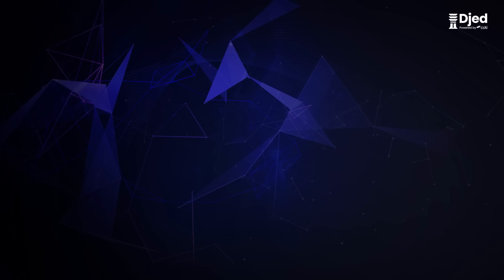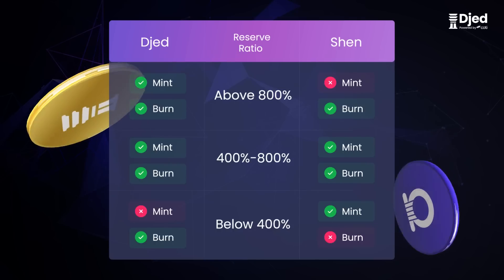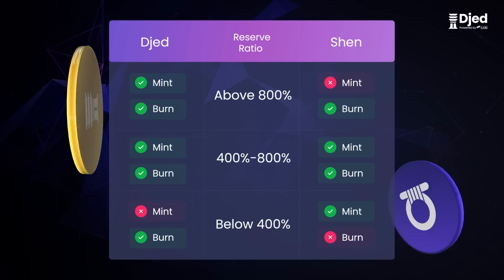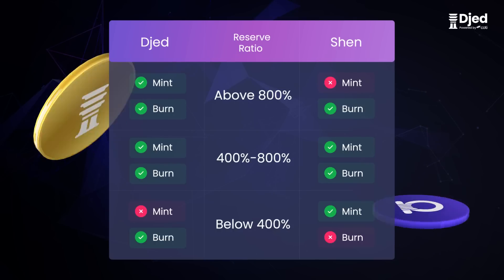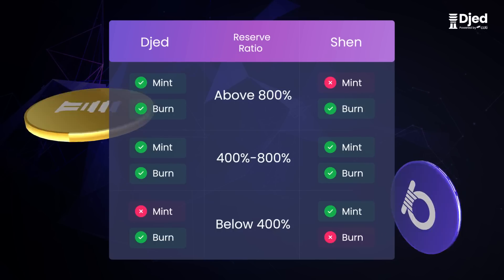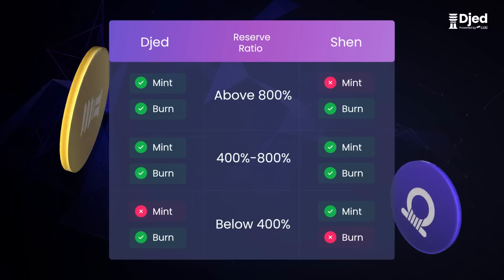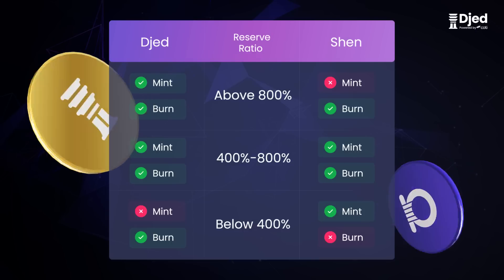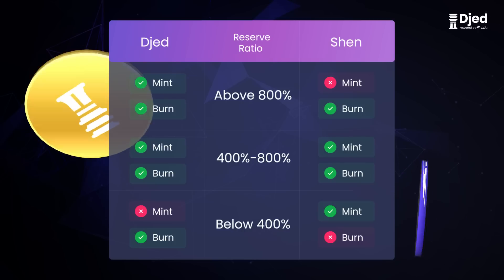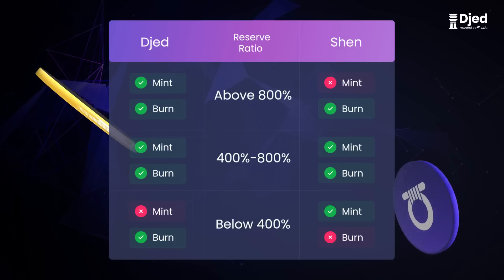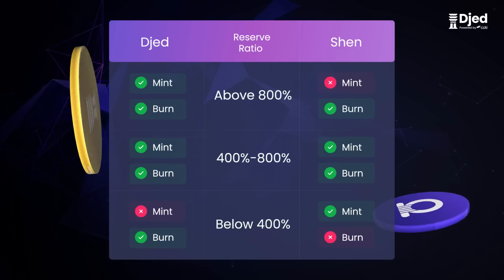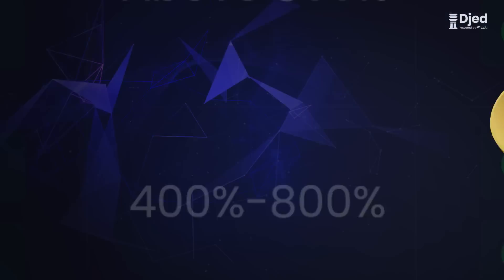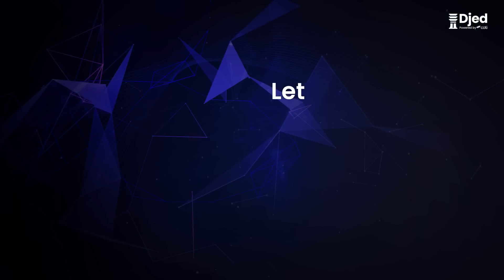SHAN guarantees the collateralization rate of the protocol in order to ensure there's enough ADA in the pool, even in cases where ADA's value fluctuates. JED is over-collateralized by 400–800% and it has a unique mechanism that guarantees its over-collateralization.